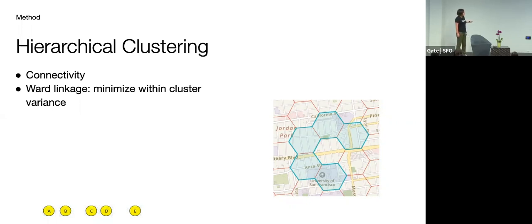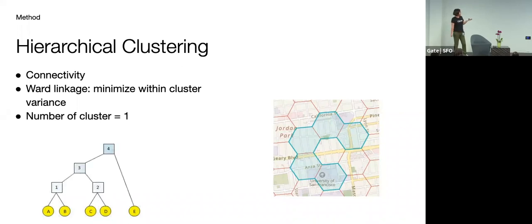So we can compare the pairwise distance. And here we are using a Ward linkage, which minimizes the within cluster variance. So for each pair of connected hexagons, we can compute this Ward linkage. And then we merge, we cluster together the pair that gives us the smallest within cluster variance. So for instance, let's assume A and B got clustered together. And then we can continue this process so C and D gets clustered together.